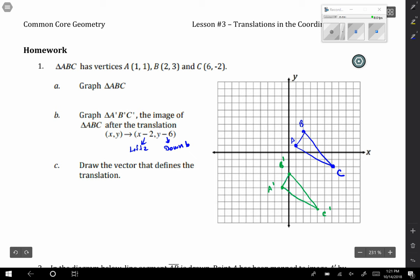And then it says draw the vector that defines the translation. So remember in class, we talked about vector lines. They are just lines that also show direction and distance. So if I was to go from C to C prime, there would be my vector line. From A to A prime, from B to B prime. All three of those red lines are showing the same distance, the same direction. And they're also actually parallel to each other, something we'll talk more about in lesson number four.